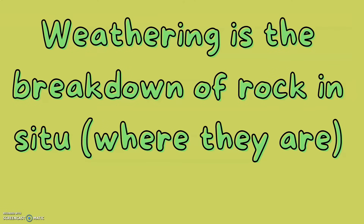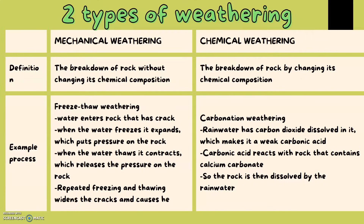So what is weathering? Weathering is the breakdown of rock in situ, which is where it is. There are two types of weathering: mechanical, which is the breakdown of rock without changing its chemical composition, and chemical, the breakdown of rock by changing its chemical composition.